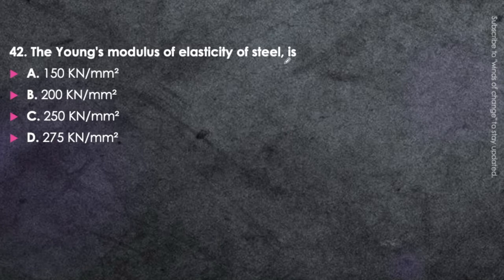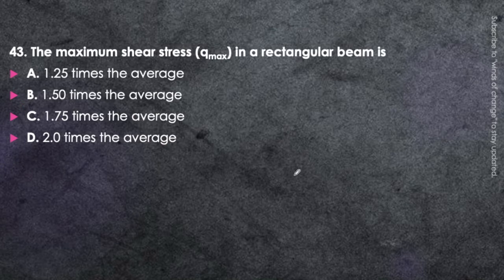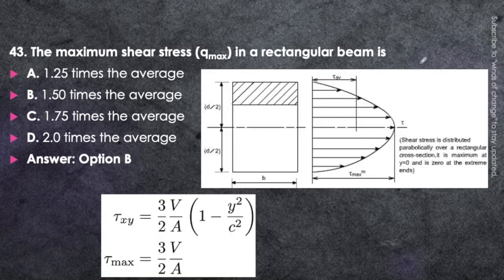Next question: The Young's modulus of elasticity of steel is 200 kN/mm² — option B. Next question: The maximum shear stress τ_max in a rectangular beam is 1.5 times the average — option B. The variation shows T_average and T_max occurring at the neutral axis. Here, τ_max = (3/2) × (V/A), which equals the average shear stress multiplied by 1.5.